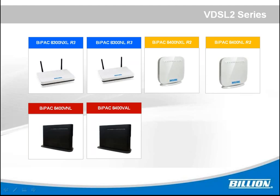From the name you can tell whether the device is ADSO or VDSO. For VDSO, we don't provide 1x1 11N — we all provide 2x2 11N, and we even provide 11AC in this model. Let's go to the first one, AD300NXL — it's a four-port switch plus 2x2 11N with USB port. The second one is AD300NL, the same but without USB port.